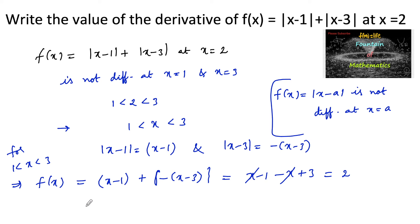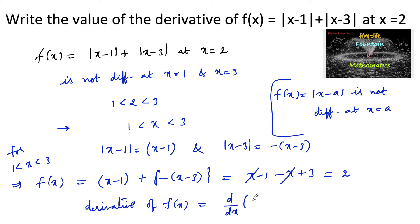At x = 2, the derivative of f(x) is d/dx of 2. The differentiation of a constant is 0, so the answer is 0.